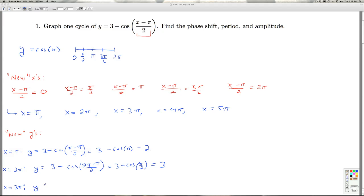For x equals 3π, I get y equals 3 minus the cosine of 3π minus π/2, which is 3 minus the cosine of 5π/2 or π. The cosine of π is negative 1, so 3 minus that is 4.